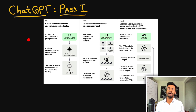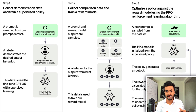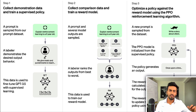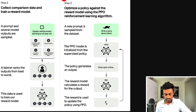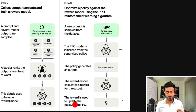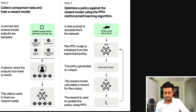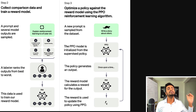Hello everyone and welcome to another episode of Code Emporium. In this video we are going to continue our discussion on ChatGPT. I'm going to make this video into three passes: the first pass will give a brief overview of how ChatGPT works in about two minutes, the second pass will go into further details of step three, and the third pass will describe each component in greater detail. If you want a better understanding of how reinforcement learning is used in ChatGPT, you've come to the right place.